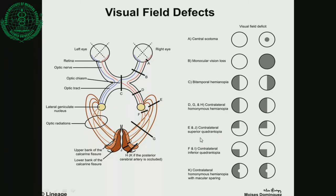Different damages at different sites along the visual pathway carry corresponding visual field defects. For example, damage to the left optic nerve gives left anopia, while damage to the right gives right anopia. Damage at the optic chiasma gives bitemporal hemianopia. Damage at point C on the optic tract gives right homonymous hemianopia. Damage at the optic radiation gives right homonymous quadrantanopia.